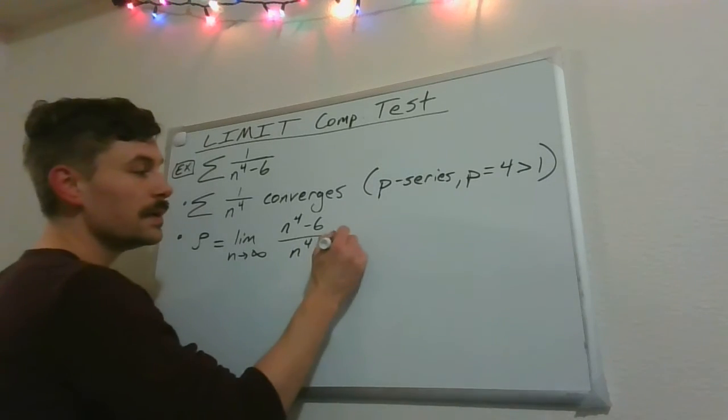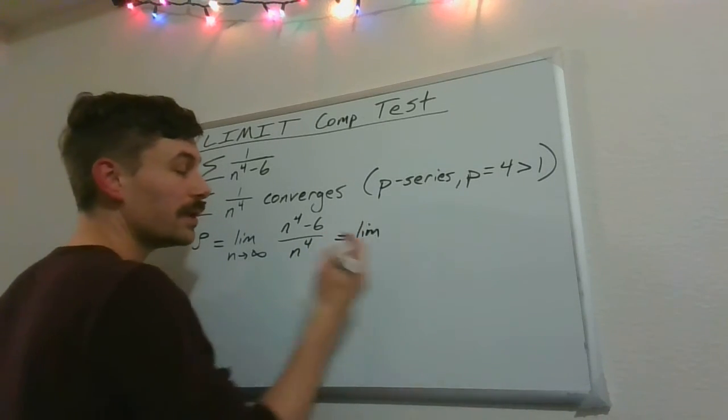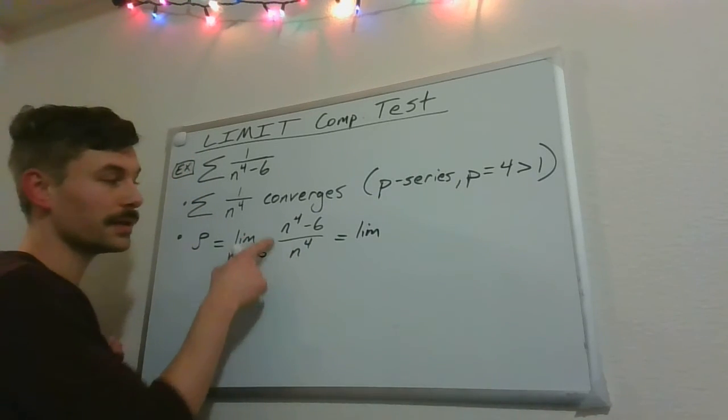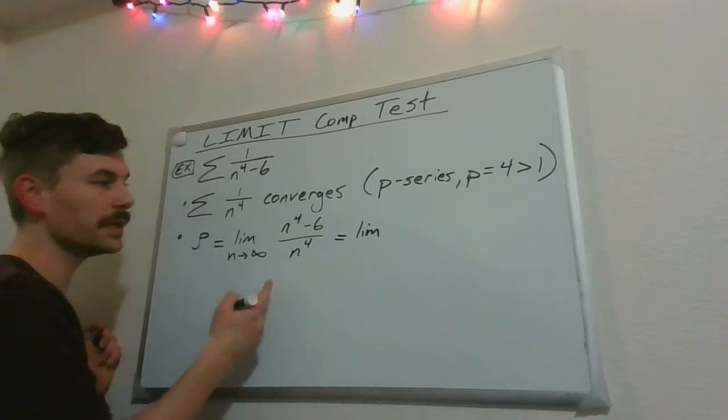So anyway, let's take a look at the limit. So we can do a few things with this. We've got polynomials on the top and the bottom, so we can look at the ratio of the leading terms. That's one way to do it.